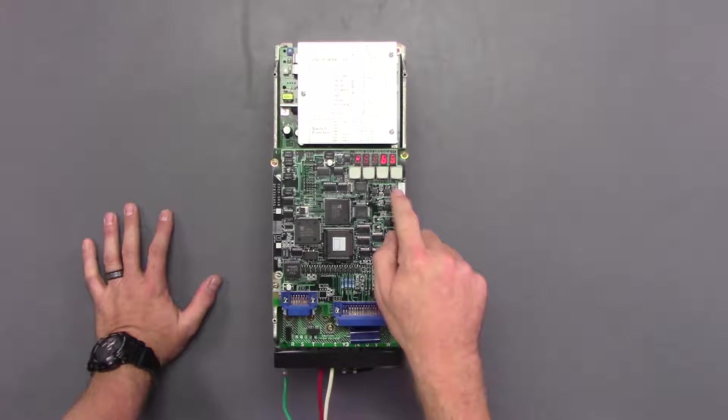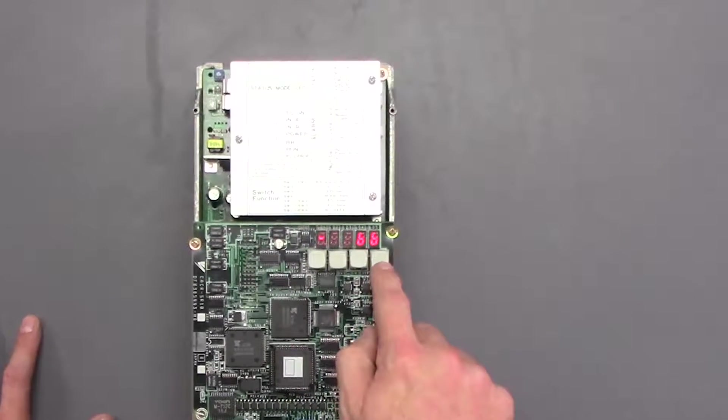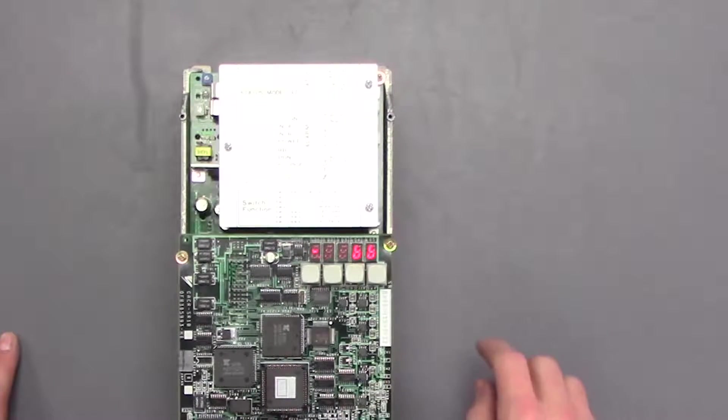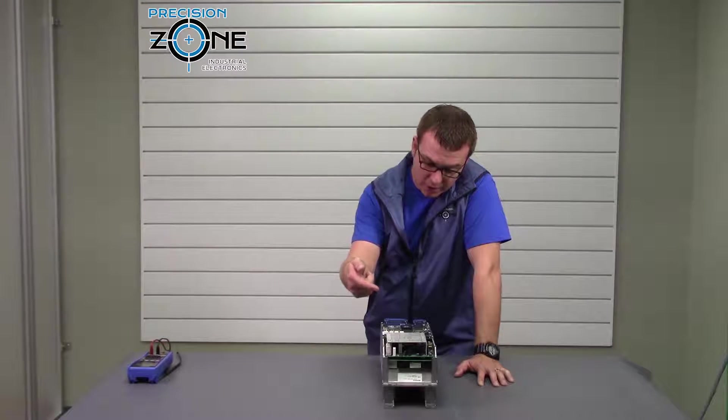So currently we're in the status mode and we're in the BB which is a base block mode. So we have status mode, we can go into a CN which is changing parameters, UN which is our monitoring mode, and then we have where we go the next is where we can check the alarms.